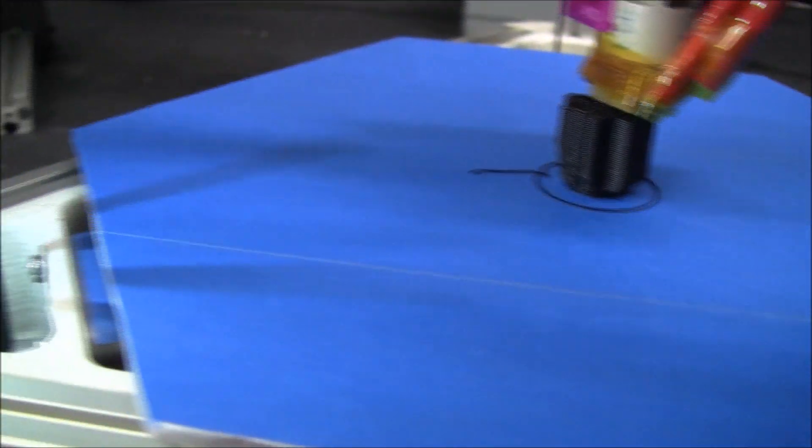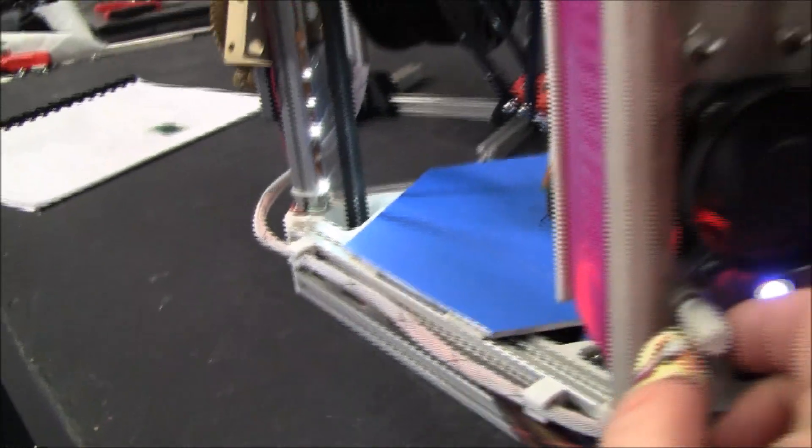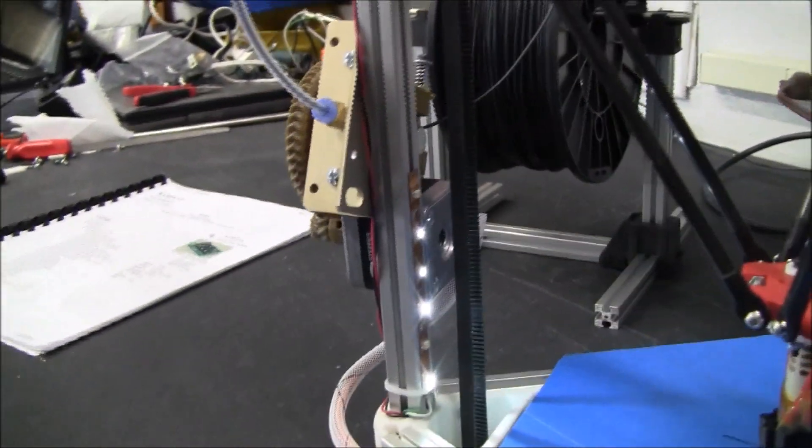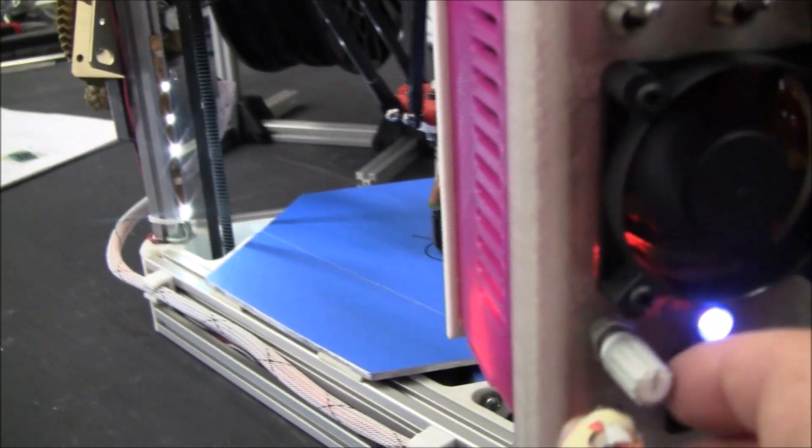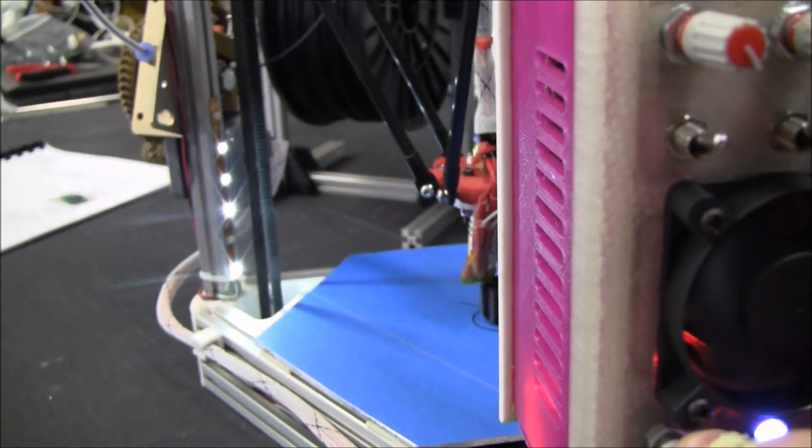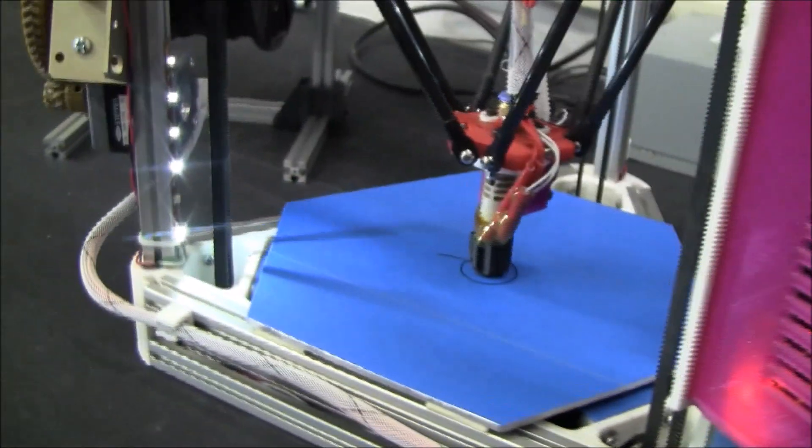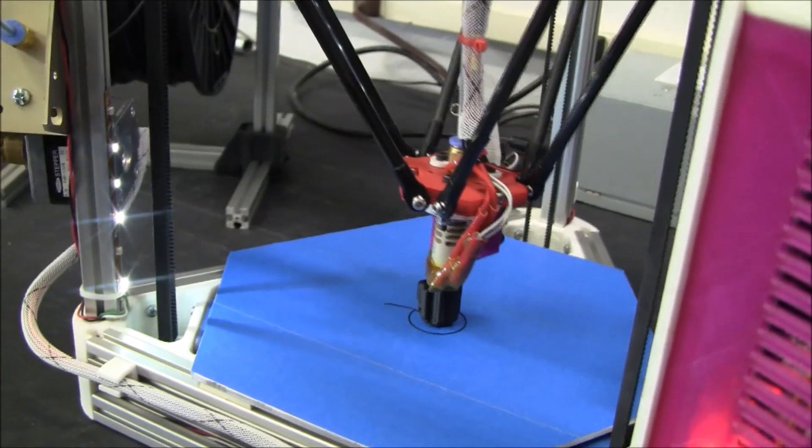Sometimes it can seem like there's a shadow right under the hot end. So, I have a light. And those are just little LED light strips. Those are pretty cheap. I got those on Hobby King. But I've got a potentiometer here. And a switch. So I can look at my print.